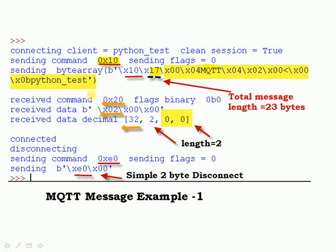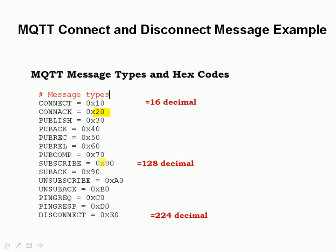The receive message is 20, which is the connection acknowledge, and it's got a length of 2. The receive data length is 2 and it's got 0, 0, 0 in the remaining bytes. In decimal: there's the connection acknowledge, there's the length field, and there's the data — this is the variable header. At the bottom we can see the disconnect, which is E0, and you can see that disconnect code here.